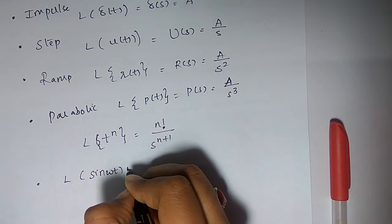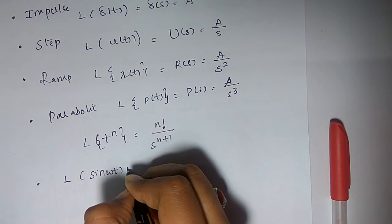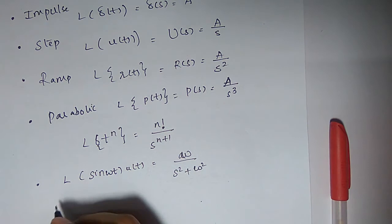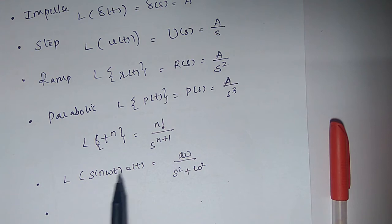And Laplace of sine omega t u of t is nothing but omega by s square plus omega square. Always for periodic functions, it is defined for sine omega t u of t only. If u of t is not there, you cannot write the Laplace transform.